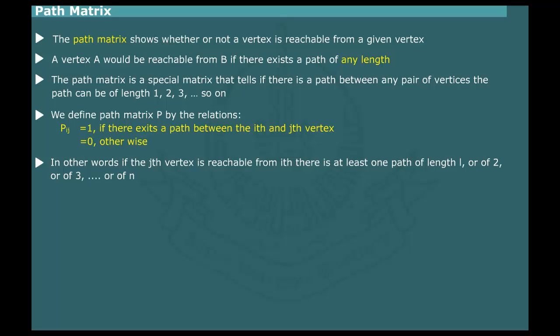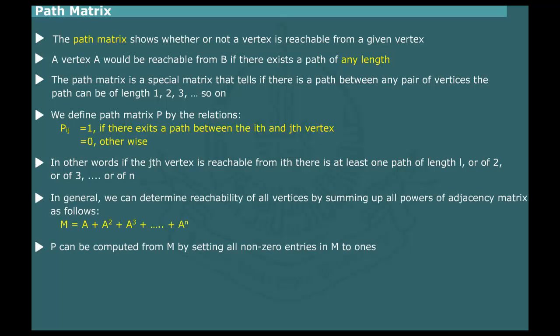If the i-th vertex is reachable from the j-th vertex, then there must be at least one path of length 1, or of length 2, or length 3, and so on up to n, where n is the number of vertices in a graph. Therefore, we can determine the reachability of all vertices by summing powers of adjacent matrix A as follows, where n is the total number of vertices. The path matrix P can be determined by setting all non-zero elements in M to 1.